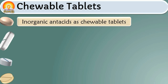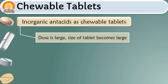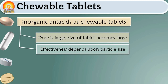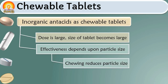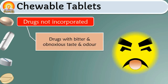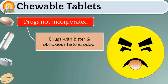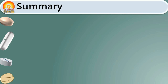Inorganic antacids are mostly formulated in chewable tablet form for two reasons. First, the dose of inorganic antacids is large, making the tablet large and difficult to swallow. Second, the effectiveness of inorganic antacids depends upon particle size — chewing reduces particle size, which leads to better and faster neutralization of acid in the stomach. Drugs having bitter or obnoxious taste and odor cannot be formulated as chewable tablets.